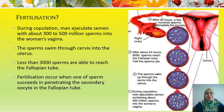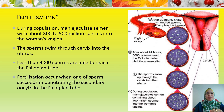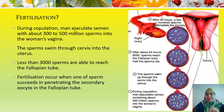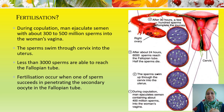Now we look at the events that occur before the process of fertilization. During copulation, men will ejaculate semen with about 300 to 500 million sperms into the woman's vagina. The sperm will swim through the cervix to go into the uterus. Less than 3,000 sperm are able to reach the fallopian tube — both the right and left fallopian tube.